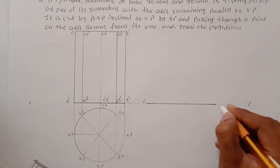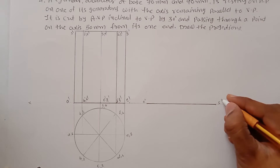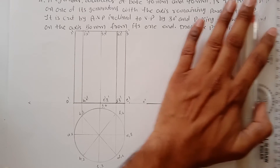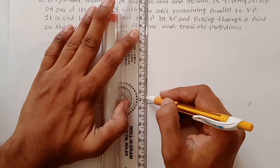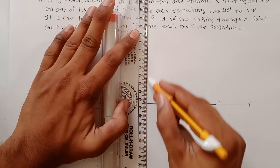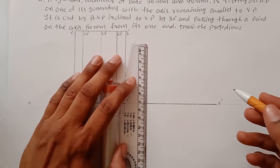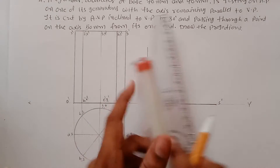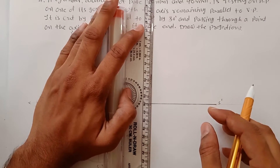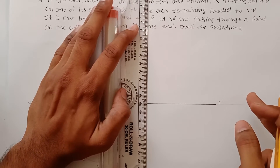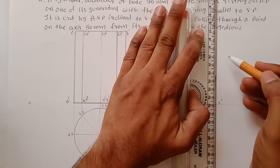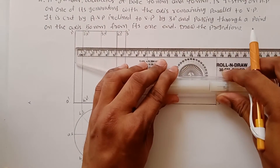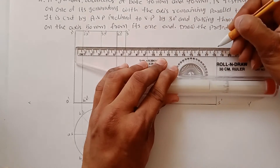Now draw vertical lines at each end of the generator, each 70mm long — because the diameter of the circle is 70mm. Draw a vertical line of 70mm on each side and complete the rectangle. This is the front view of the solid when it is resting with its generator.